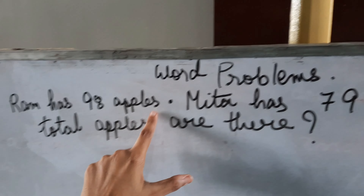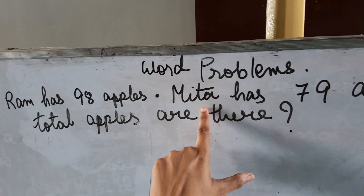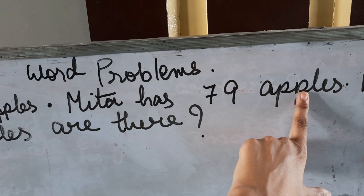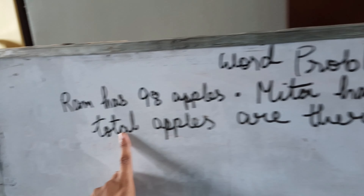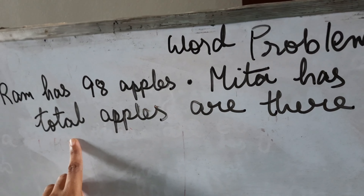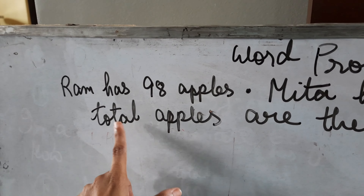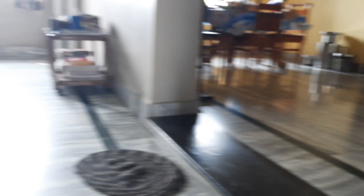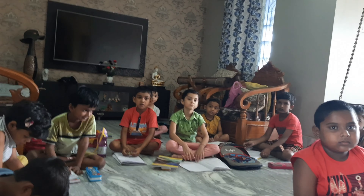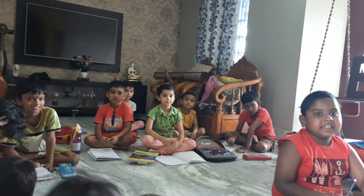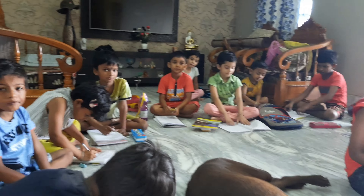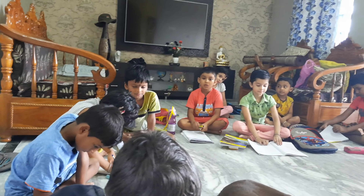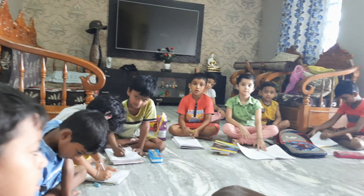Now look here. What is the question? Ram has 98 apples. Mita has 79 apples. How many total apples are there? Total is all about apples. So when I am asking you total, means what you have to do, children? Total is all about addition. When I am telling total, total means what do you do? Addition.